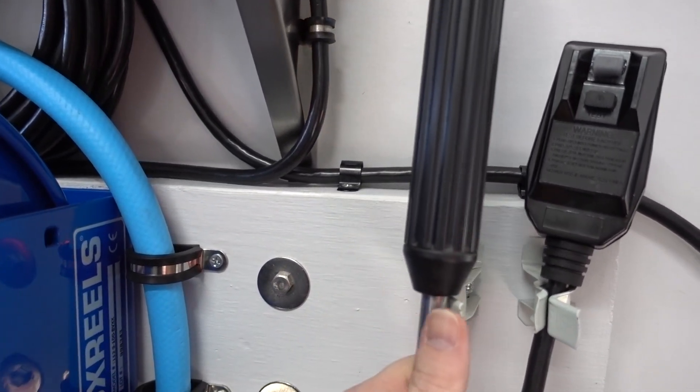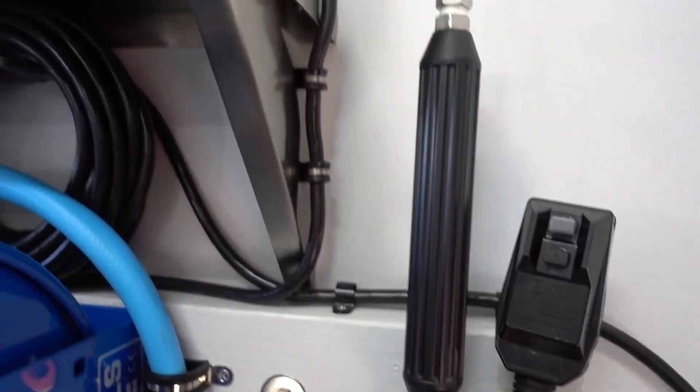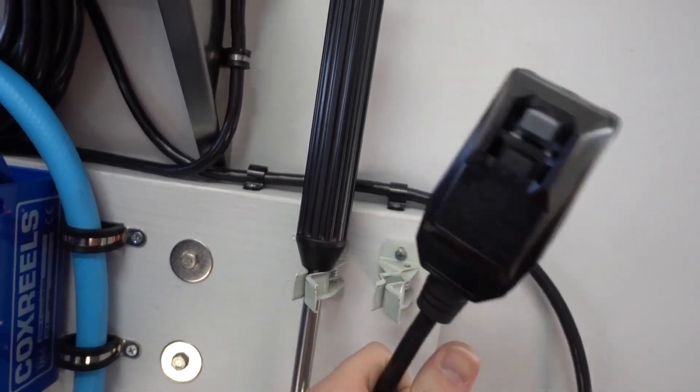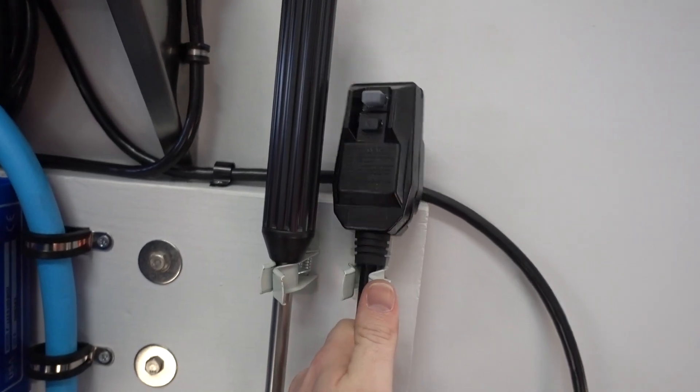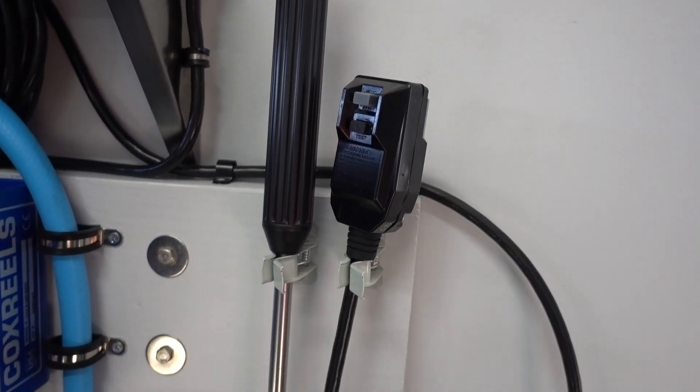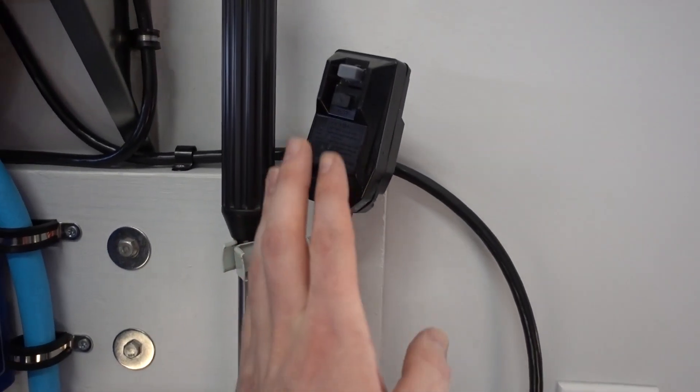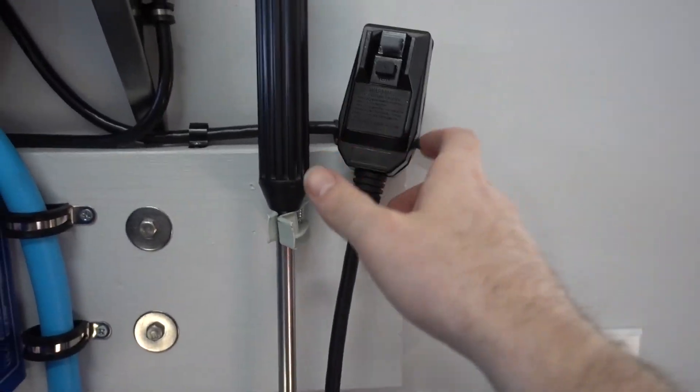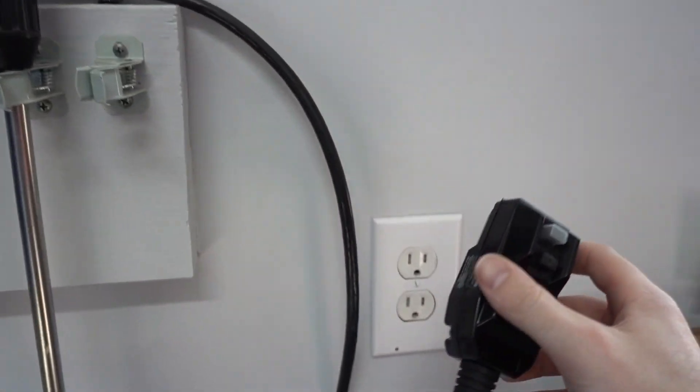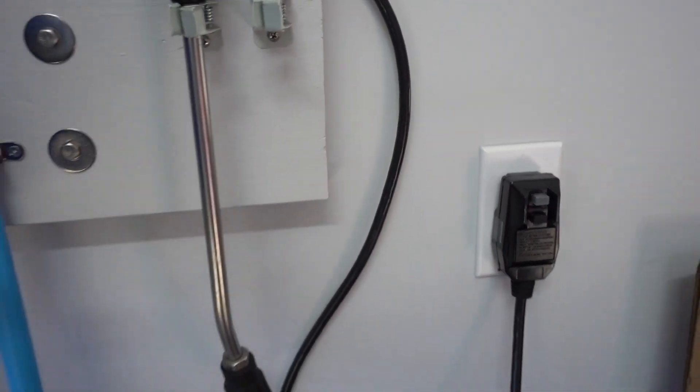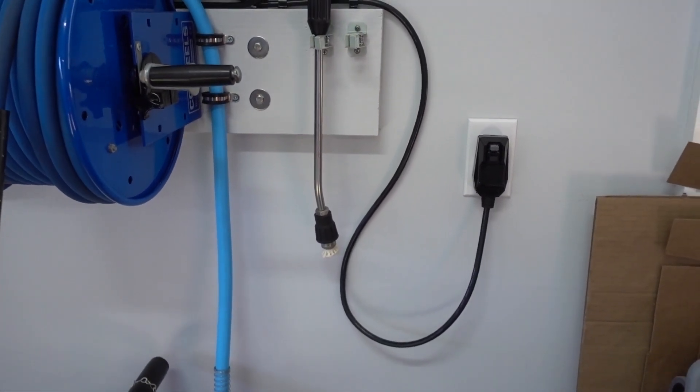So I have these little Home Depot clips here, and these hold the wand and it holds the pressure washer power cord. I just kind of put that there because I don't really like leaving stuff plugged in. So I have this left here, but you could just as easily take it out and plug it in right here next to the wall. But like I said, I don't want to leave it plugged in.